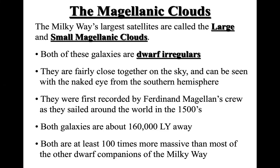The Magellanic Clouds are fairly close together on the sky and can be seen with the naked eye from the Southern Hemisphere. They were first discovered by Ferdinand Magellan, who was a sailor, around 1500. That is why they are called Magellanic Clouds, and these galaxies are about 160,000 light years away from us.